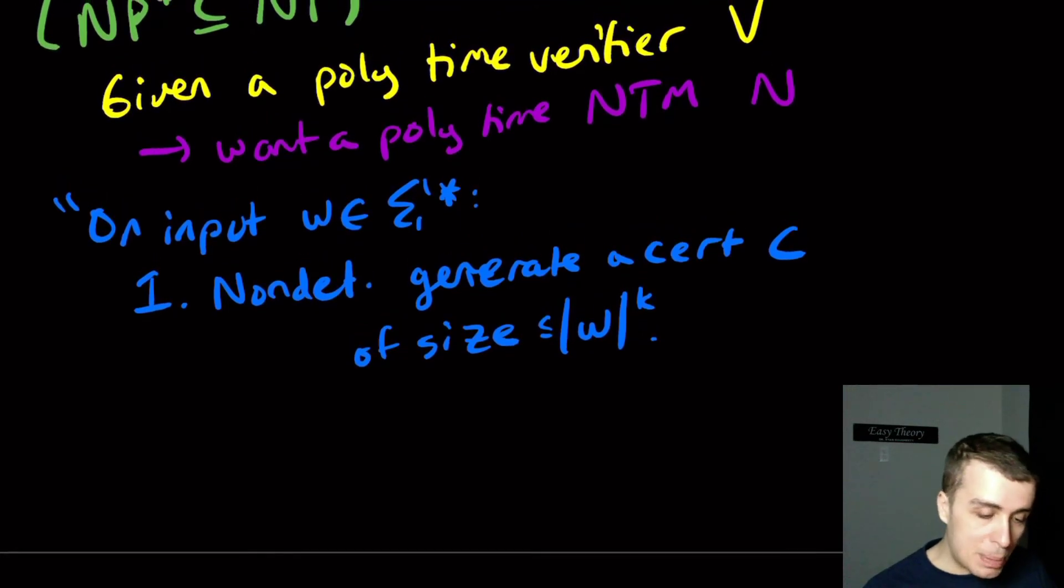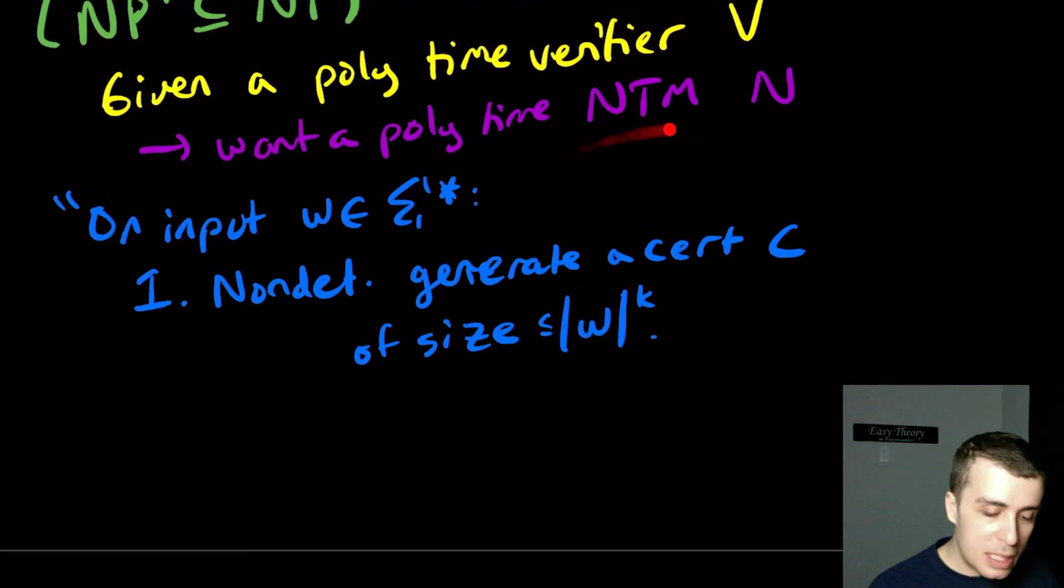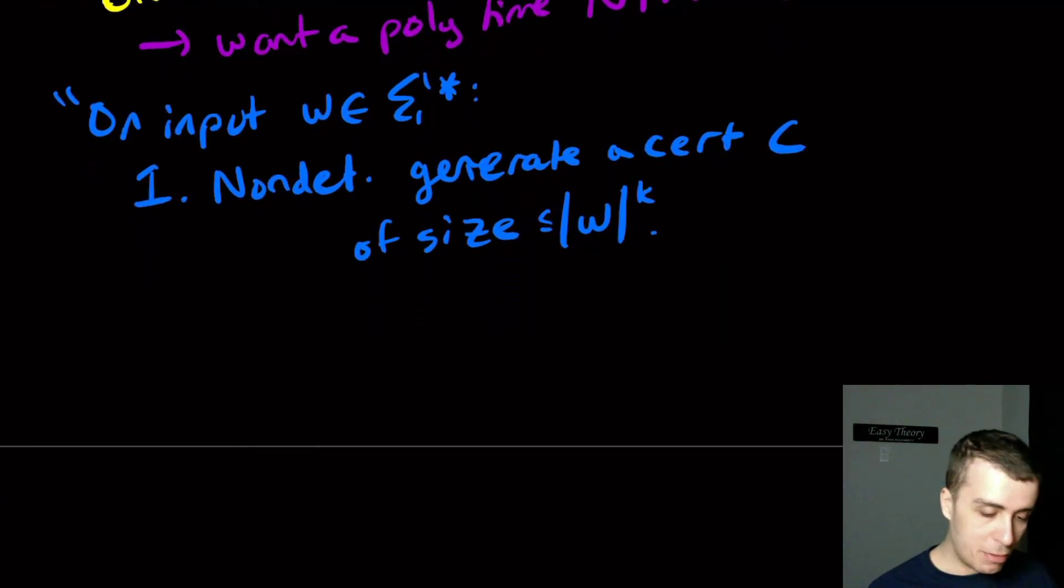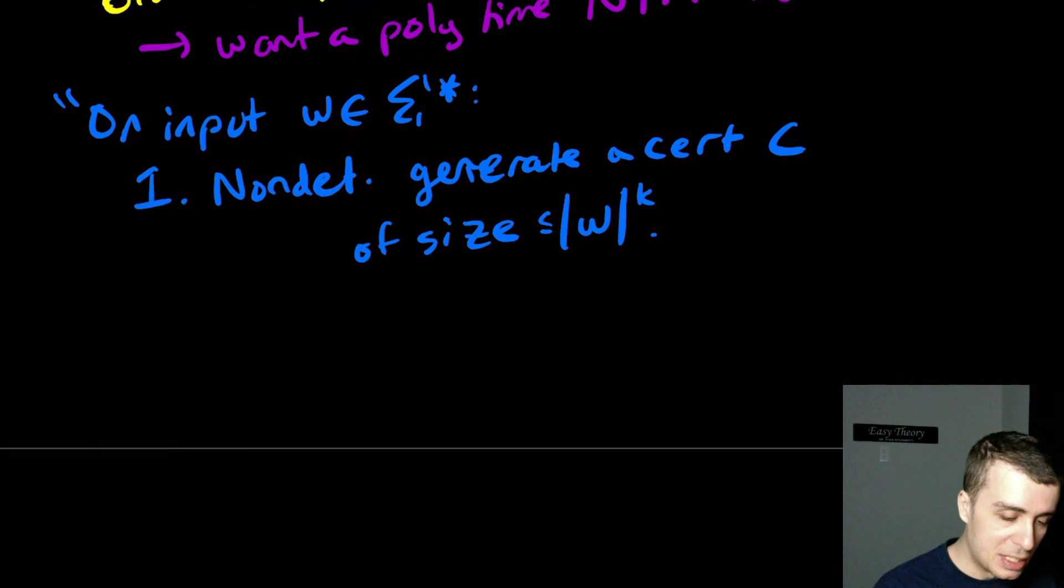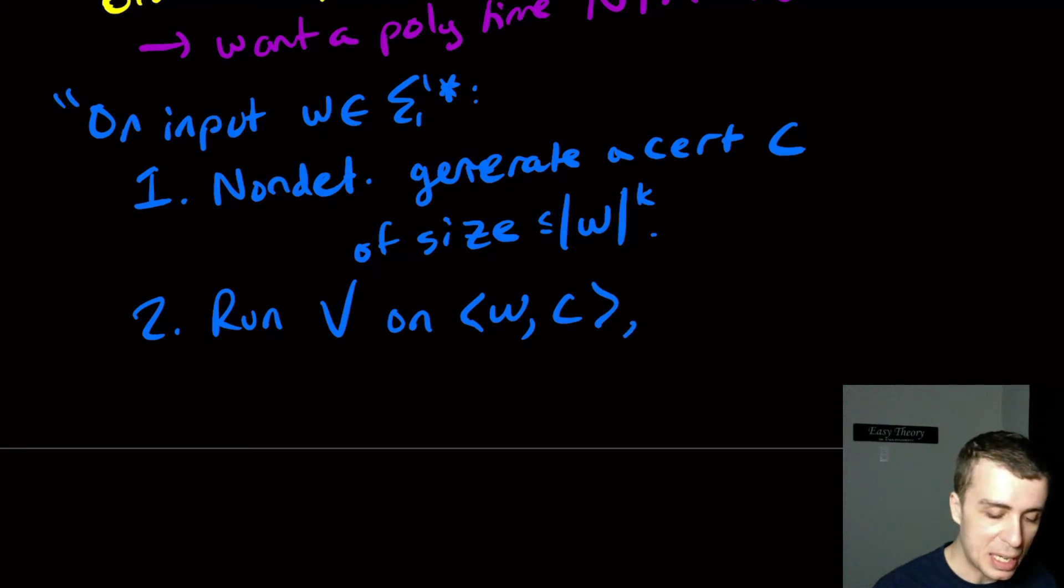And if it happens to not be a polynomial, well, this verifier right here will not be able to read the whole certificate anyway. So it's not really an issue here, but let's just enforce that the certificate is at most a polynomial in size. And then what we'll do is we'll say whatever the verifier says. So run the verifier V on the original input that we were given upstairs and that certificate that we just made C and report the same answer.